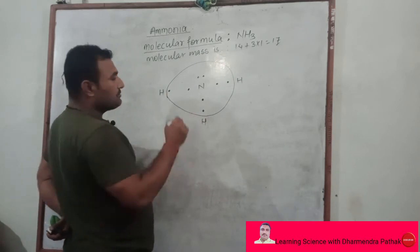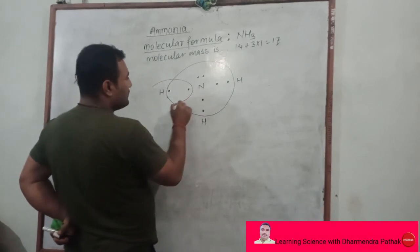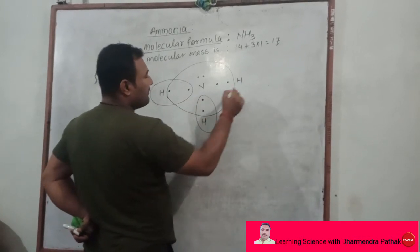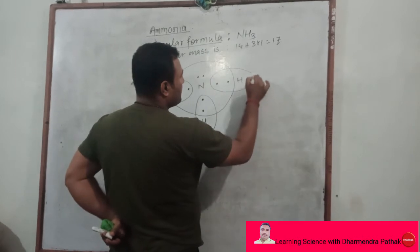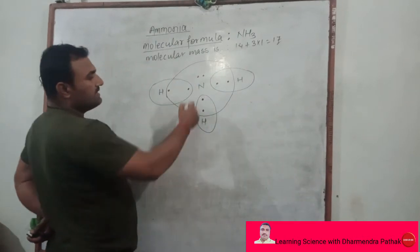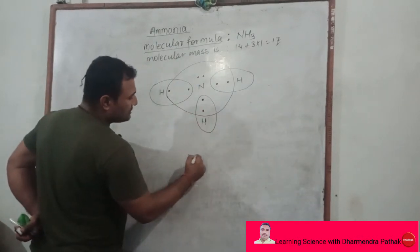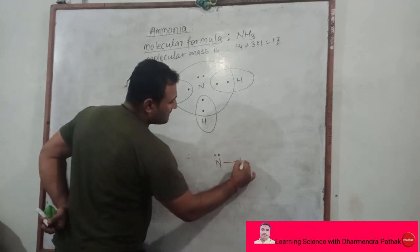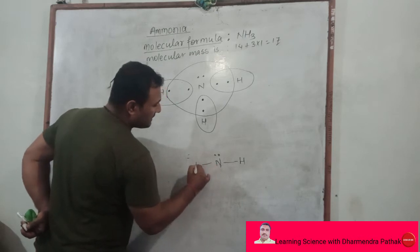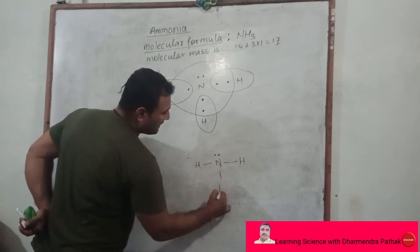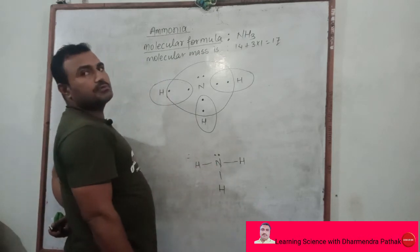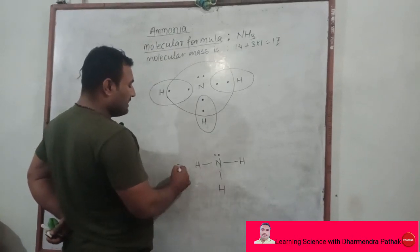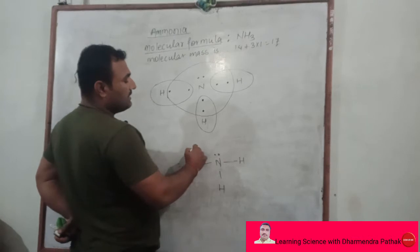Here, the octet of nitrogen gets fulfilled, and the duplet of each hydrogen is completed. This gives a simple molecular bonding structure of ammonia, where nitrogen is bonded to 3 hydrogen atoms. This describes only the bonding structure, not the exact shape.